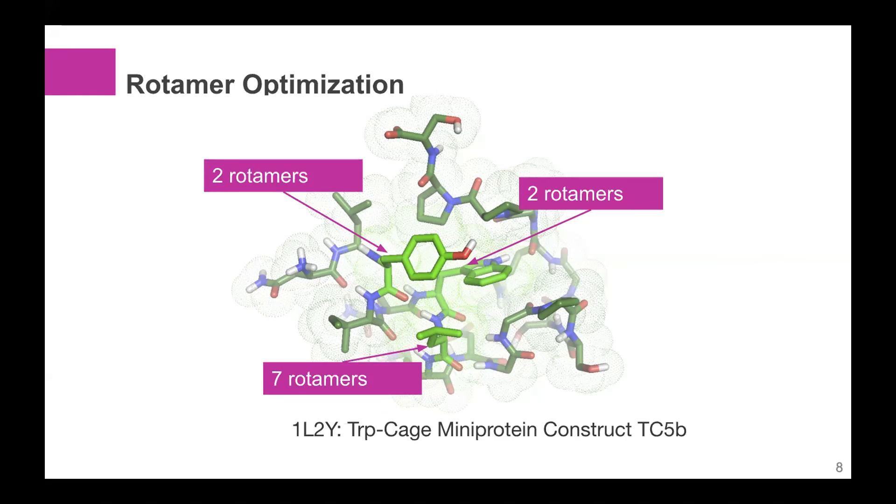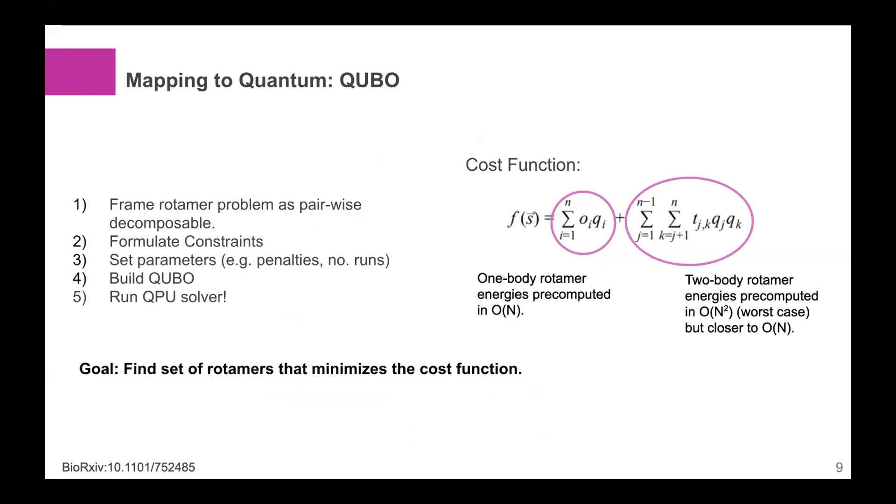And so when we think of this problem, actually, let me go to the next slide here. When we think of this problem, it is a combinatorial optimization problem of the kind that should be amenable to quantum computing. Now, I'm going to go over this slide, which is somewhat technical, but I'll try to keep it high level. And if you have any questions, please feel free to ask in the Q&A.